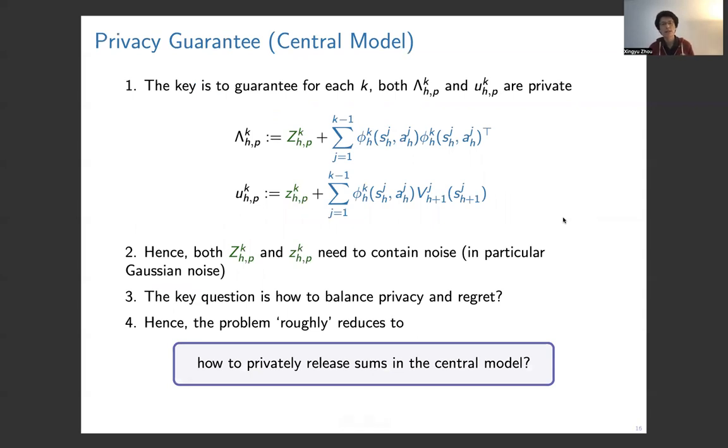Now we will say, we have the theoretical regularizer and theoretical regret bound. Now we want to choose a particular form for the regularizer so that we can guarantee privacy. Because the previous result or the regularizer could be used for other cases, not for privacy. But for now, we focus on privacy. For privacy, the two regularizers should contain some noise, random noise, in particular Gaussian noise, to achieve (ε,δ)-DP. Another key question is how to balance privacy and regret, because we want to add minimal noise to guarantee privacy so that we can achieve reasonably good utility or regret. The problem now reduces to the following question: how to privately release sums in the central model? Because, as you can see, λ and u are sums.